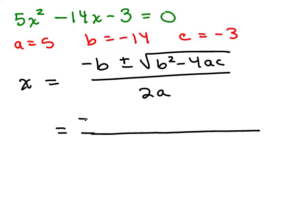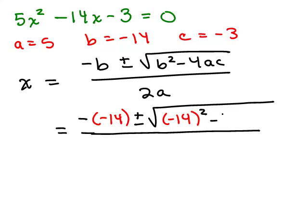Plus or minus the square root, and then we could put negative 14 in for b here. Negative 14 squared minus 4 times a which is 5, and then c which is negative 3.